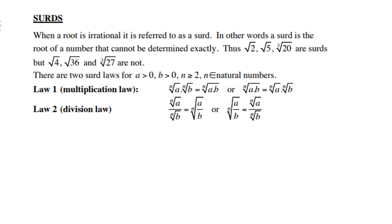You can try this on the calculator and you will notice the answers will be non-terminating decimals. But square root of 4, square root of 36, and cube root of 27 are not surds because you can determine them exactly.